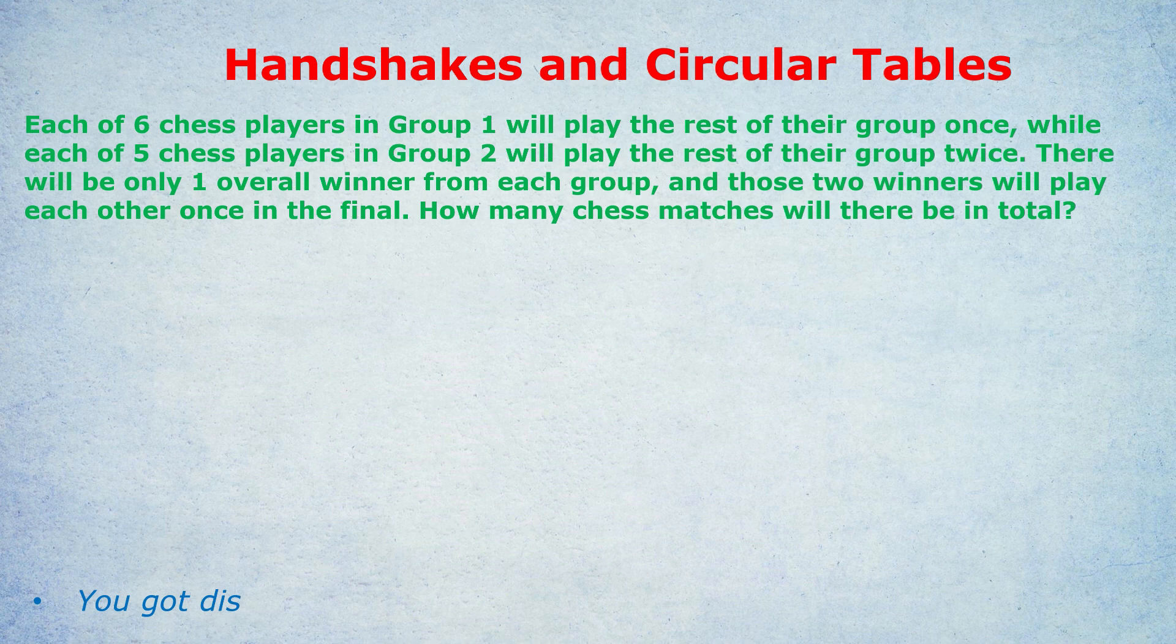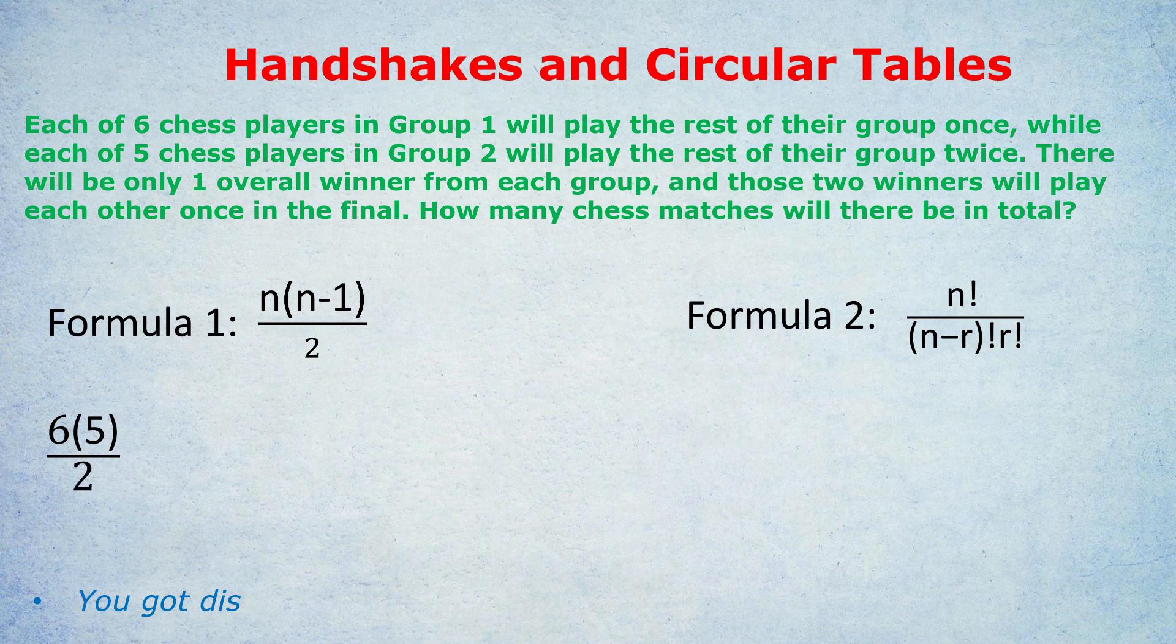Group one is a bit simpler. It's a bit like the handshake question. You've got six people, and they're each going to play chess against each other, and a chess match involves two players. Therefore, we can simply apply either formula: six choose two for formula number two, or six times five divided by two for formula number one. Either way, we would get the same answer. There's formula one, there's formula two, and either one is going to give us the answer of 15 for group one.